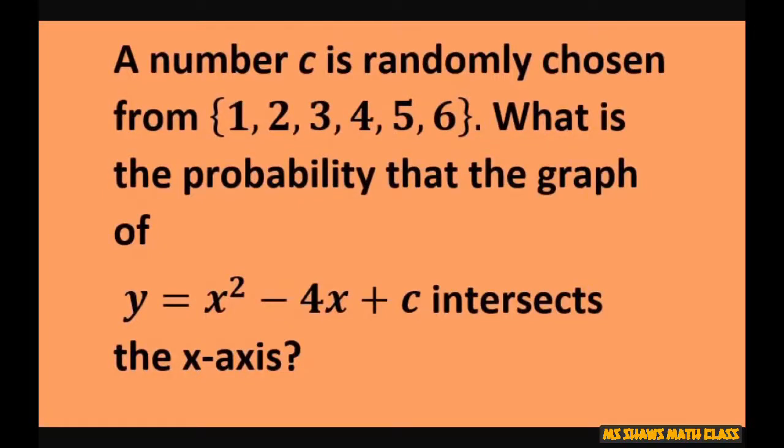Hi everyone! A number c is randomly chosen from the set 1, 2, 3, 4, 5, 6. What is the probability that the graph of y equals x squared minus 4x plus c intersects the x-axis?